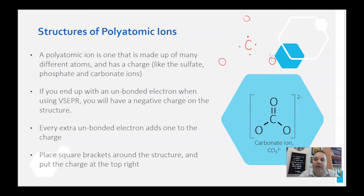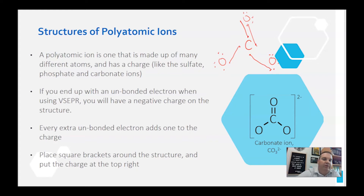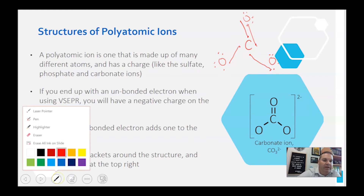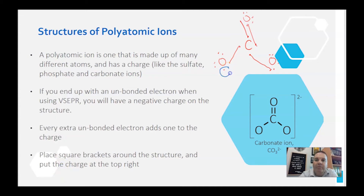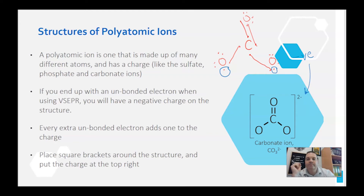Then you place your three oxygens at equal distances around the carbon. Each oxygen has six electrons. Start bonding them up — this one bonds, that one bonds, these ones bond here. You'll find there's a lone electron here and a lone electron here. Each electron has a negative charge, which is why when there are two of them we end up with a 2-minus charge on the polyatomic ion.